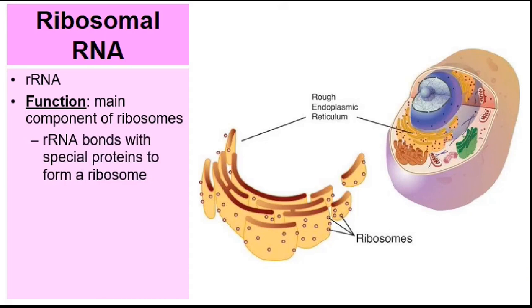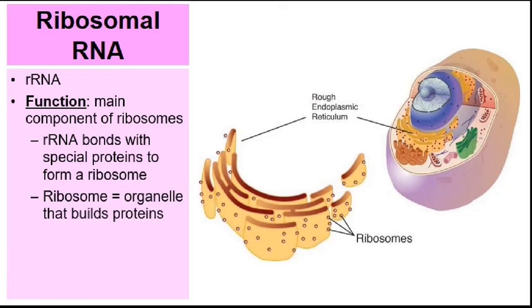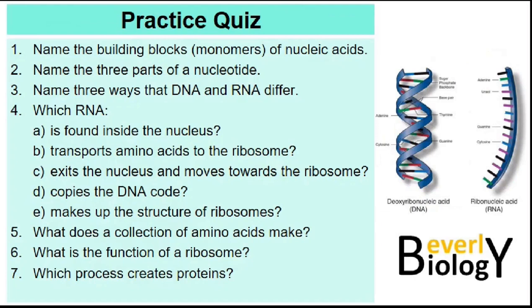Transfer RNA is actually picking up the amino acids and carrying them and delivering them to the ribosome. One by one, the amino acids are picked up by transfer RNA and delivered to the ribosome, and the ribosomes link the amino acids together one by one in order to make a protein. This is the process called translation. That's the general job of transfer RNA.